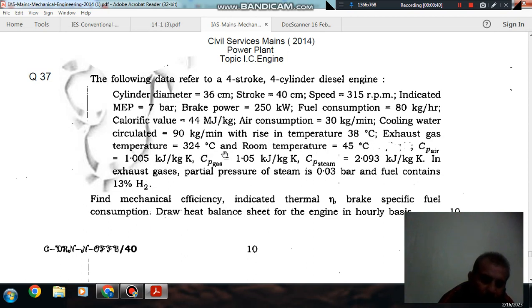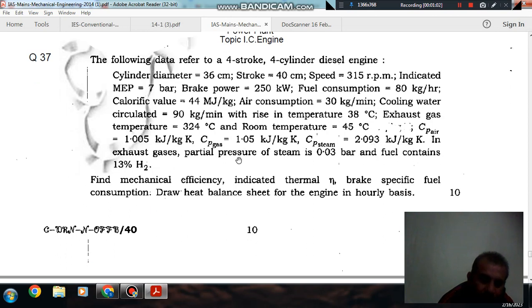Cooling water circulated 90 kg per minute with rise in temperature 38 degrees Celsius. Exhaust gas temperature 324 degrees Celsius and room temperature 45 degrees Celsius. Cp air equals 1.005 kJ per kg K, Cp gas equals 1.05 kJ per kg K, Cp steam equals 2.093 kJ per kg K. In exhaust gases, partial pressure of steam is 0.03 bar and contains 13 percent H2. Find mechanical efficiency, indicated thermal efficiency, brake specific fuel consumption. Draw heat balance sheet for the engine on hourly basis.